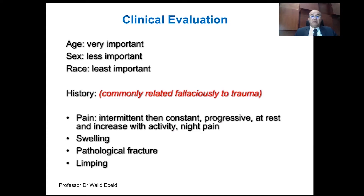Clinical evaluation is the first step in reaching a diagnosis of a bone tumor. It includes personal history, history of the present illness, past history, then local examination and general examination. Age is actually the most important aspect of personal history, because certain types of tumors occur in certain age periods. You never find metastasis and myeloma in a child. On the other hand, chondroblastoma occurs in a skeletally immature patient and couldn't be part of the differential diagnosis in elderly people.